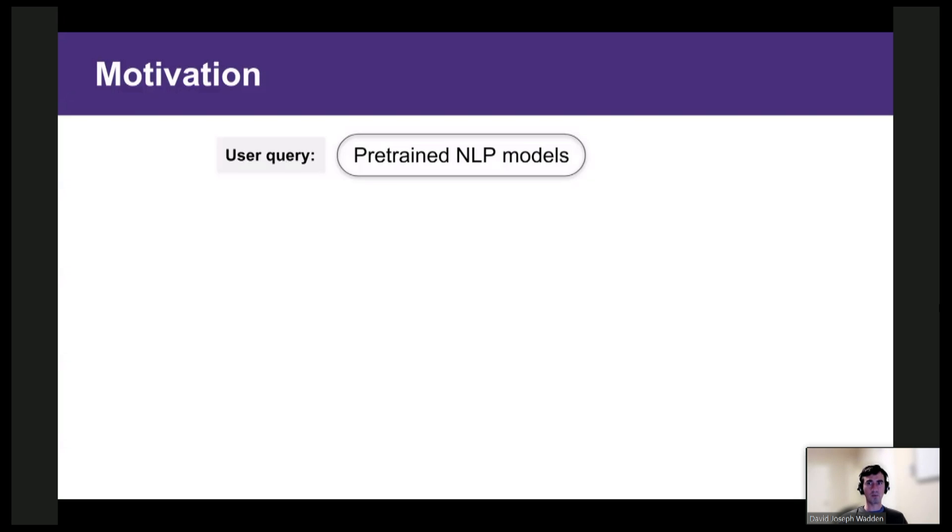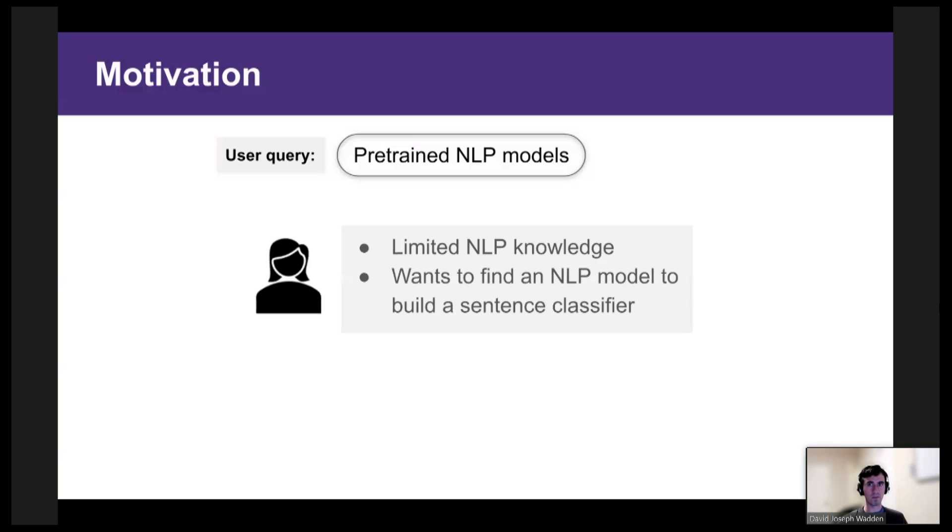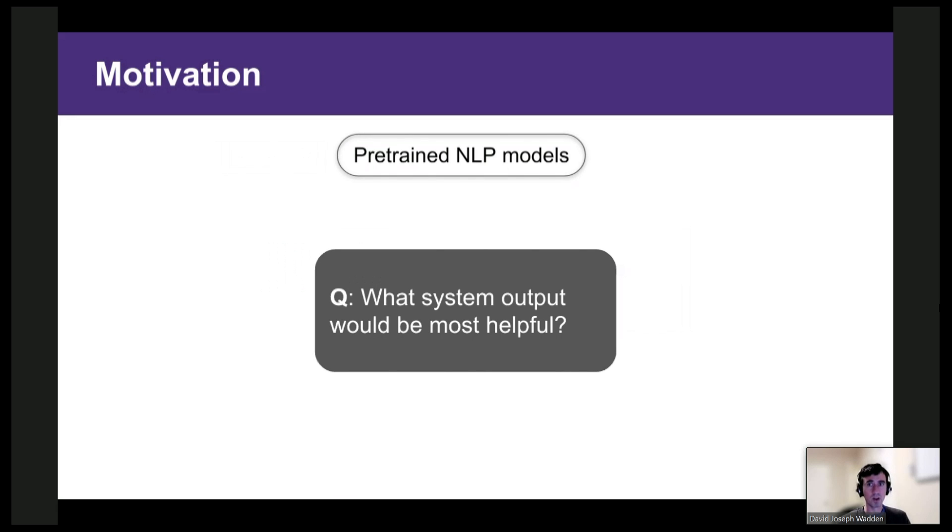So as motivation, we'll start with a hypothetical user who has entered a query for pre-trained NLP models into a search engine. And we'll imagine that this user isn't an NLP expert. Maybe they're a software engineer interested in building a sentence classifier for a web app. So what system output would be most helpful to this user? To answer this, we can start by making an observation about the query. It's an example of what I'll call an entity-centric query, which is a query whose answer is a list of entities.